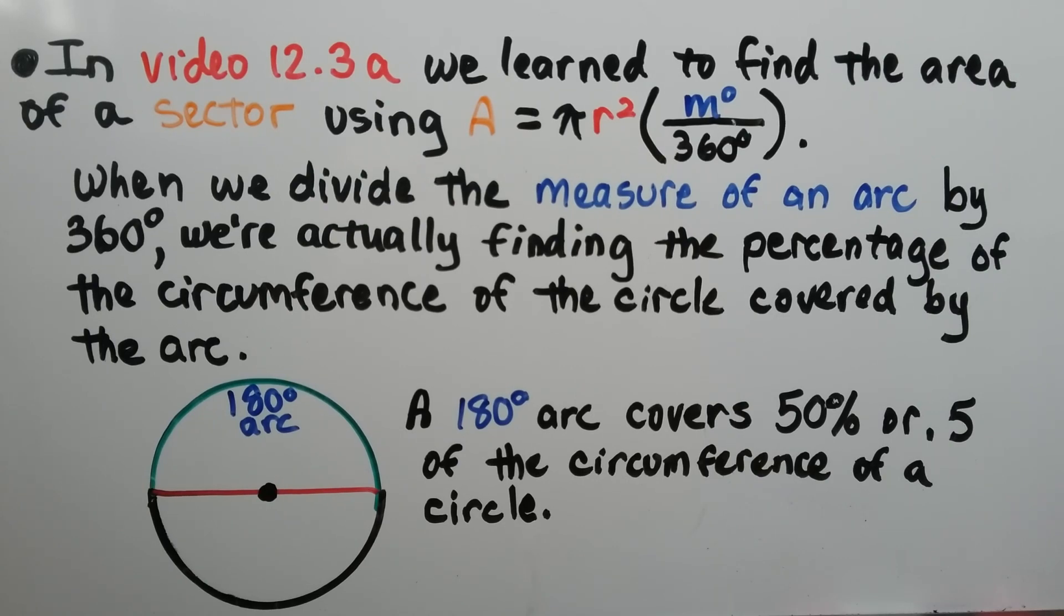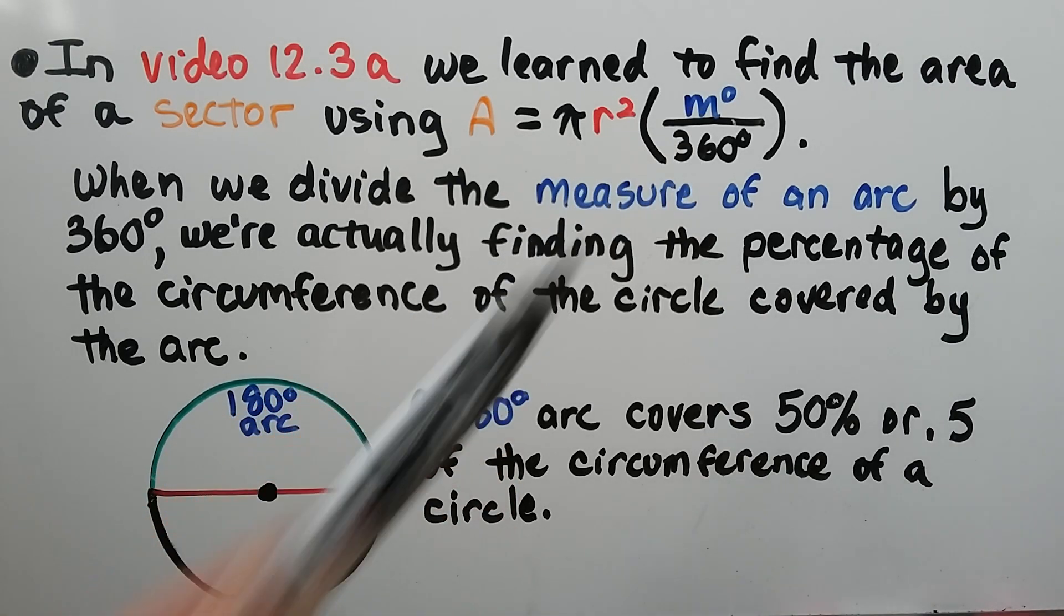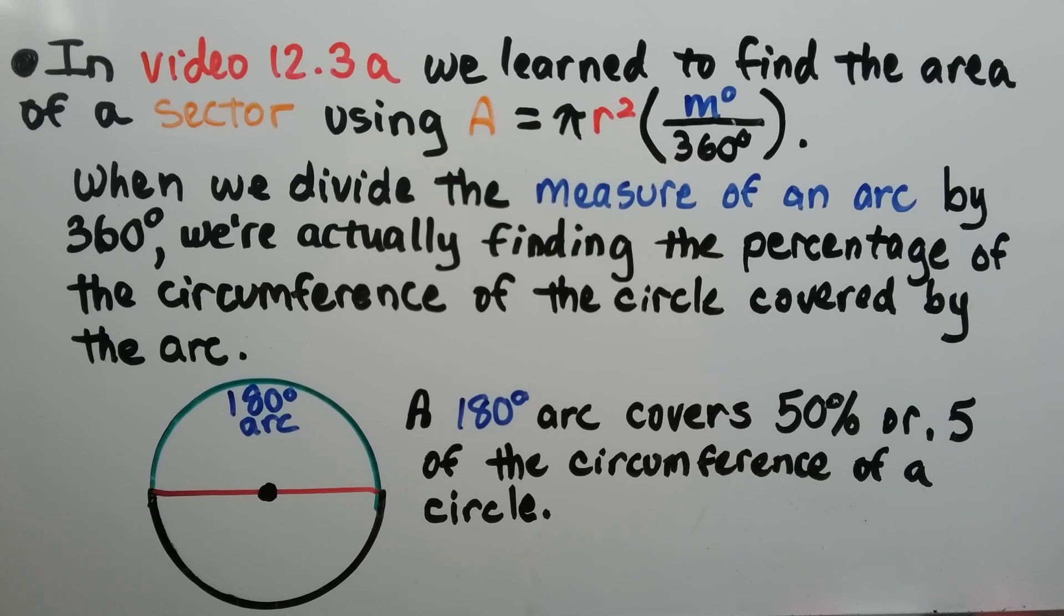In our last video, 12.3a, we learned to find the area of a sector using the formula A equals pi r squared times the quotient of m degrees and 360 degrees. And when we divide the measure of an arc by 360 degrees, we're actually finding the percentage of the circumference of the circle covered by the arc. So if we have a 180 degree arc here, it covers 50% or 0.5 of the circumference of a circle.